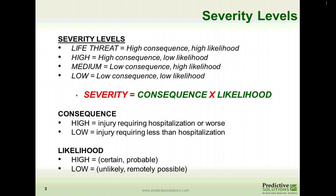Then you make a determination for likelihood — how likely is that hazard going to result in an injury? Low would be unlikely or remotely possible; high would be certain or probable. You then combine the two results to determine your severity. For example, a low likelihood with a low consequence results in low severity, while a high consequence with a low likelihood results in a high severity. Use the chart accordingly.